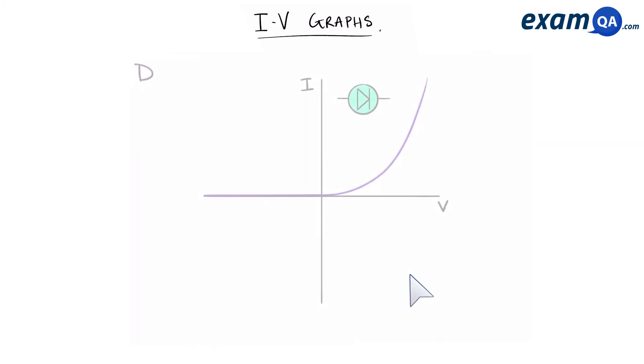And finally, we have the diode. Now with the diode, you can see that here on one side, it's completely flat. So the gradient is completely flat, so zero, which means that the resistance must be very high. On the other direction, it's beginning to get more and more steeper. Therefore, the resistance is beginning to reduce.